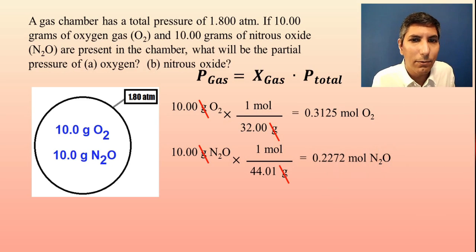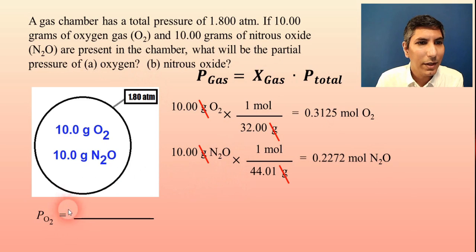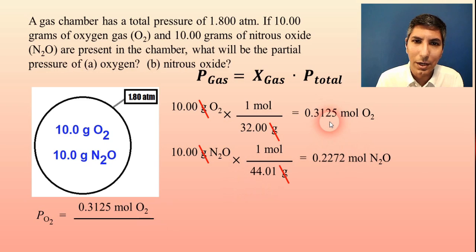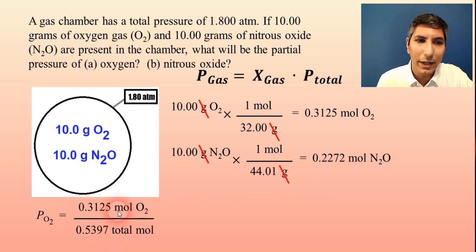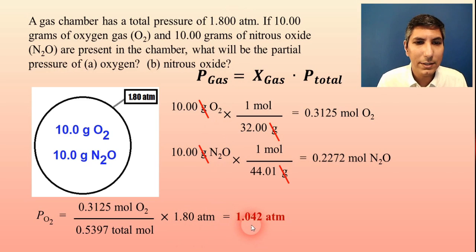Once we have the mole values, we're ready to start calculating. For part A, the partial pressure of oxygen: the mole fraction of oxygen is 0.3125 divided by the total moles. We add 0.3125 plus 0.2272 to get 0.5397 total moles. Multiplying the mole fraction by the total pressure of 1.800 atmospheres gives an answer of 1.042 atmospheres — that's the partial pressure of oxygen.